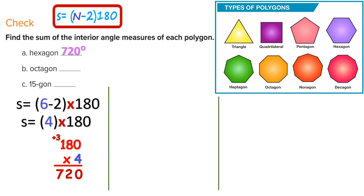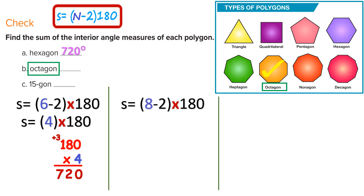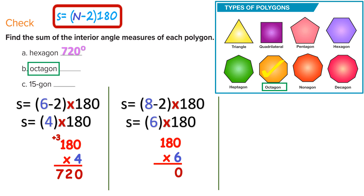For an octagon: octo means 8, like an octopus has 8 arms. The sum of interior angles of an octagon is (8 minus 2) times 180, which is 6 times 180. Six times 0 is 0, 6 times 8 is 48 — put down 8, carry 4 — and 6 times 1 plus 4 is 10. The interior angles of any octagon total 1,080 degrees.